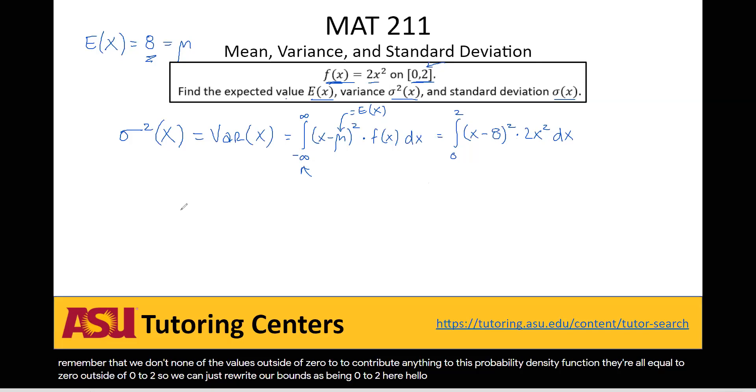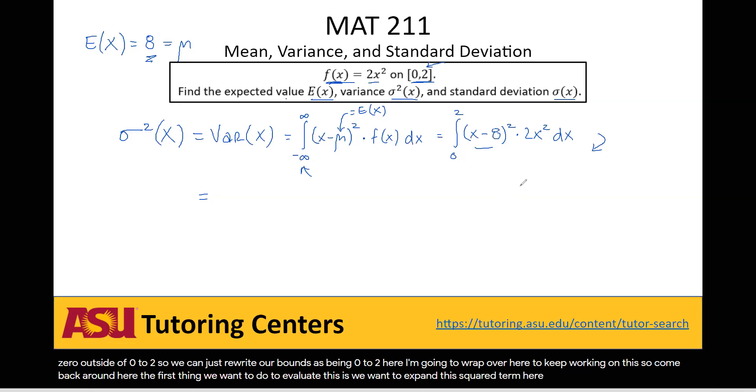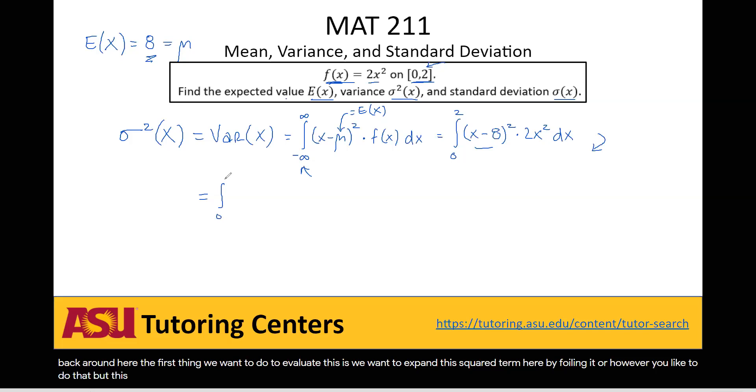So I'm going to wrap over here to keep working on this. So come back around here. The first thing we want to do to evaluate this is we want to expand this squared term here by foiling it or however you'd like to do that. But this will give us the integral from 0 to 2 of x squared minus 16x plus 64 times 2x squared dx.